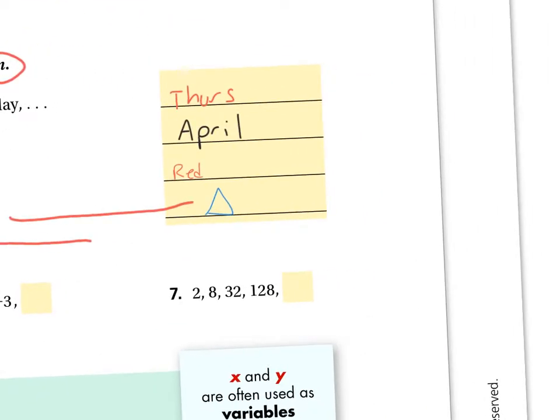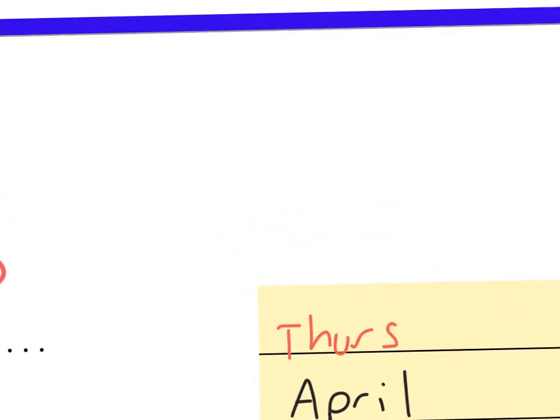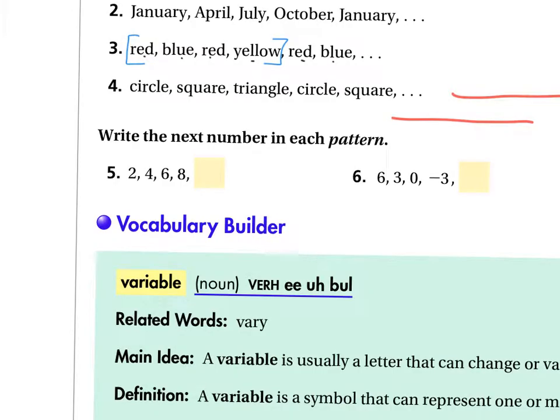So patterns - how about this one? What's the pattern for number five? Ten, because we're counting by twos: 2, 4, 6, 8, 10. These are my even numbers. Six, three, zero, negative three - good, negative six is what we get there. How do we get there? Notice each time we are subtracting three, we go down by three each time.